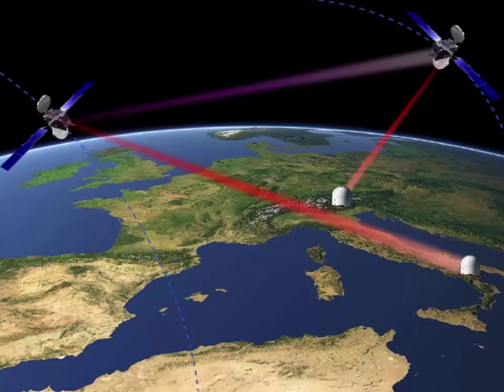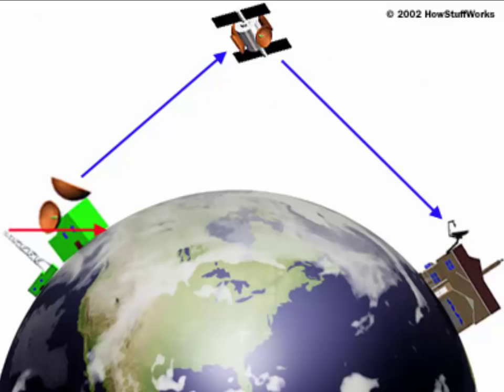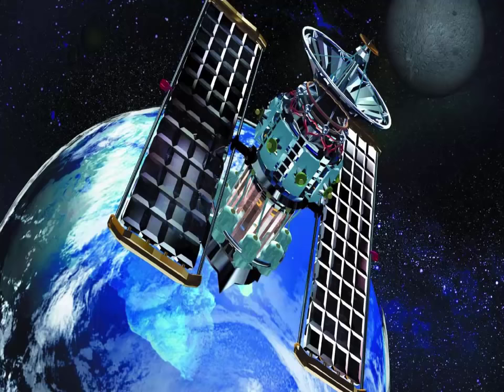Why are satellites important? The bird's-eye view that satellites have allows them to see large areas of Earth at one time. This ability means satellites can collect more data more quickly than instruments on the ground. Satellites also can see into space better than telescopes at Earth's surface.